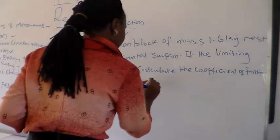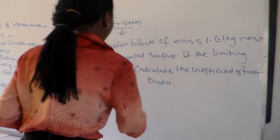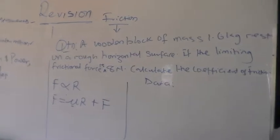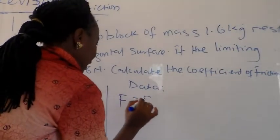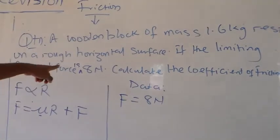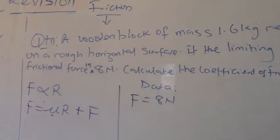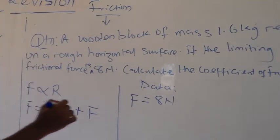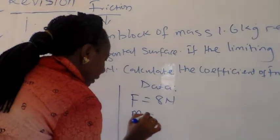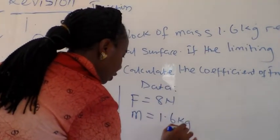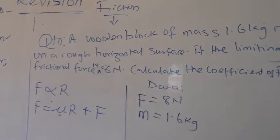So, given our data here, we have been given our F as 8 Newton, as stated in the question here. Now, we have also been given the mass of the wood, which is given by 1.6 kg.